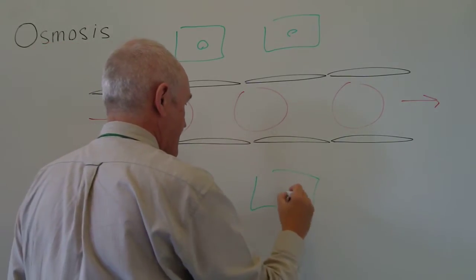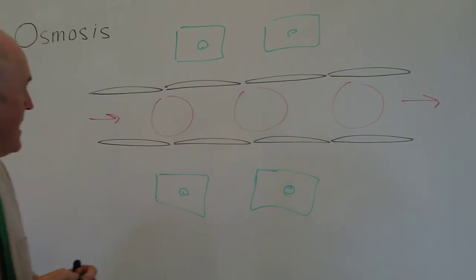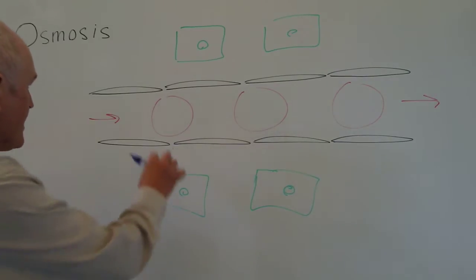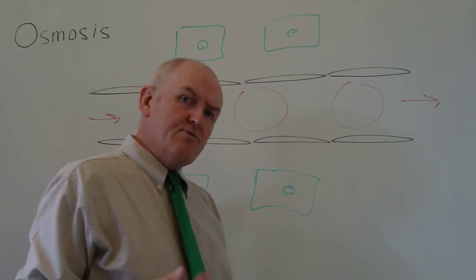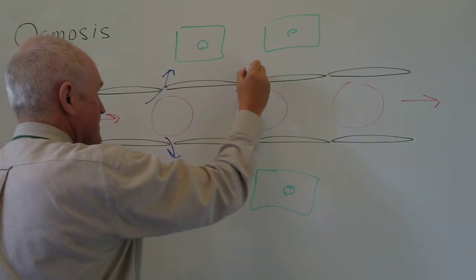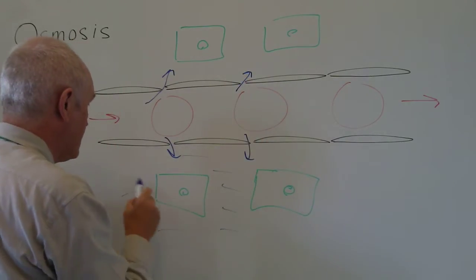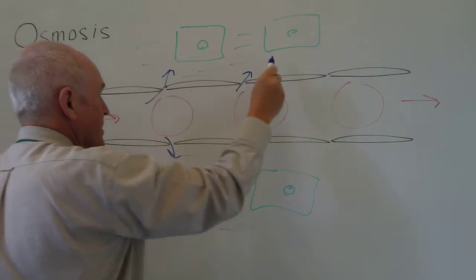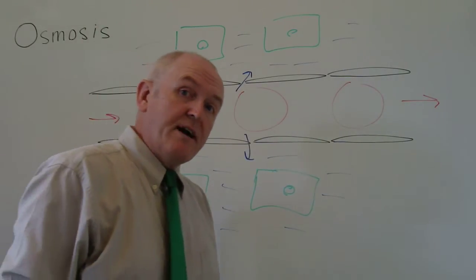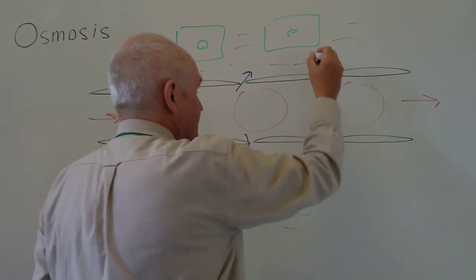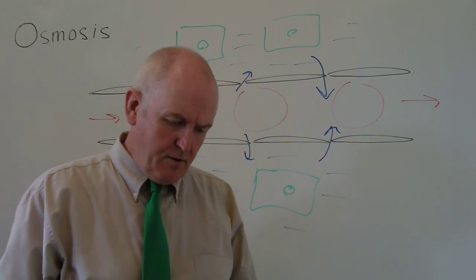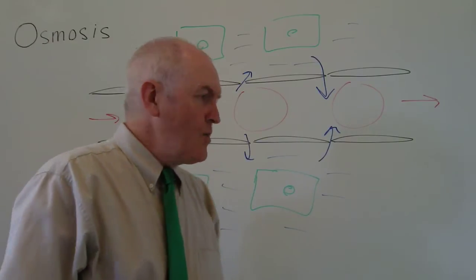There are tissue cells surrounding the capillary. The reason that tissue fluid forms is because the hydrostatic pressure at the arterial end of the capillary is greater than the osmotic pressure, so tissue fluid forms, bathing the tissues and forming the interstitial fluid. At the venous end of the capillary, the osmotic pressure is greater than the hydrostatic pressure, meaning that the tissue fluid is reabsorbed.